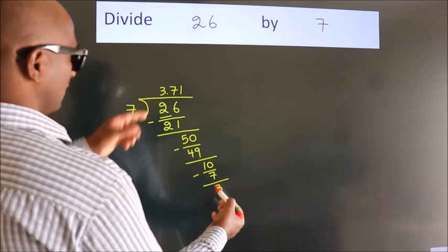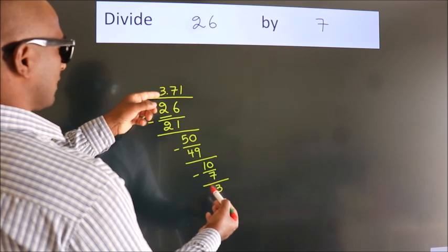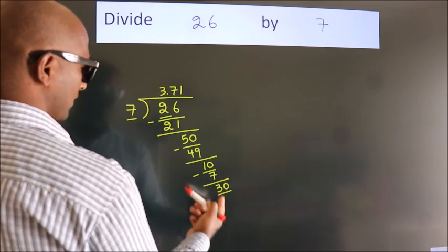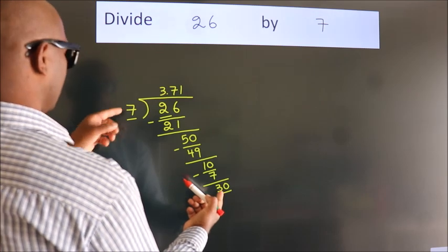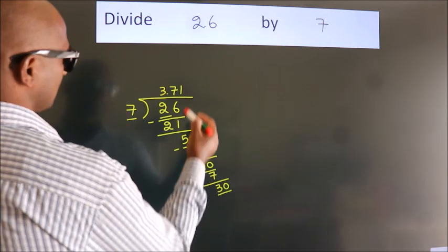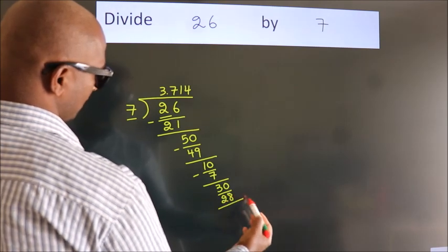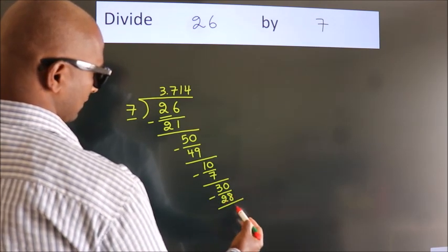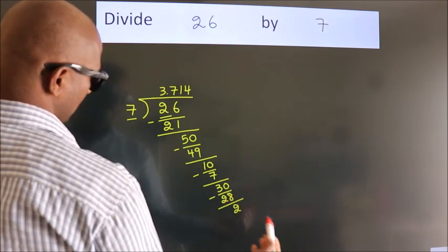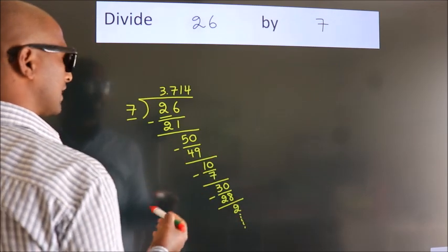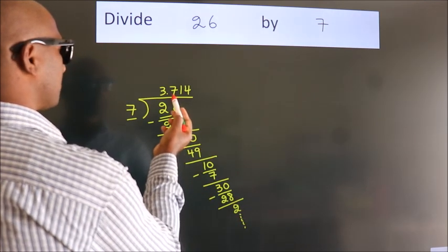After this, we already have the decimal, so directly take 0, giving us 30. A number close to 30 in the 7 table is 7 fours, 28. Now we subtract. We get 2. And the division continues. It is enough if we do up to 3 decimal places.